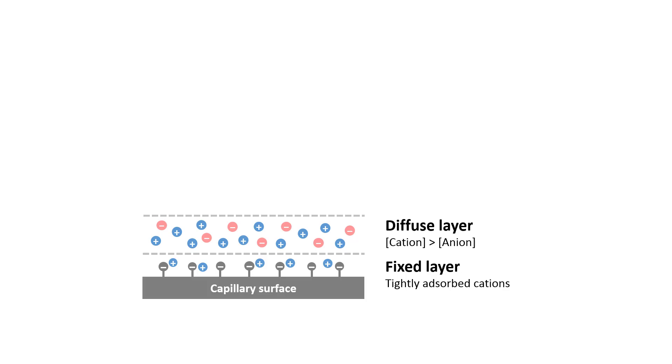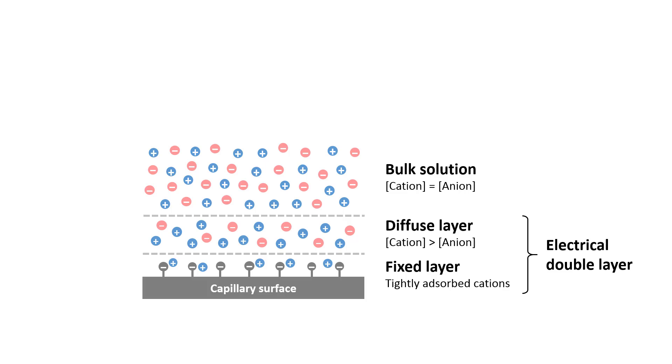At the center of the capillary tube is the bulk solution, where the concentration of the cations and anions are about the same. To complete the cross-section of a capillary, we have the diffuse layer and the fixed layer at the other end too.